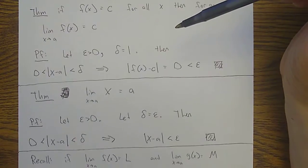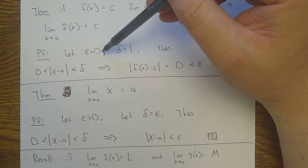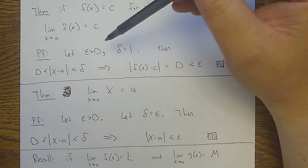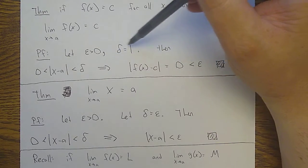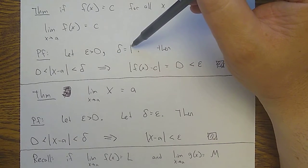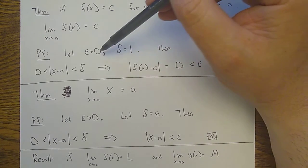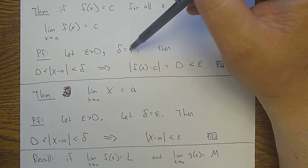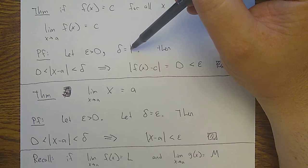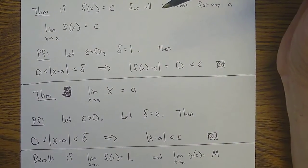We'll go ahead and prove it anyway because we have to use epsilons and deltas. The proof starts with: let epsilon be greater than zero. For these easy proofs I'm going to skip the scratch work and just tell you a delta that works. For this one, delta hardly matters — this is such an easy problem that I can choose a delta that doesn't even depend on epsilon. No matter what epsilon is, I'm going to choose the same delta; I'll just let it be one. Delta has to be a positive number, but I could choose delta to be a hundred or point zero zero zero one.